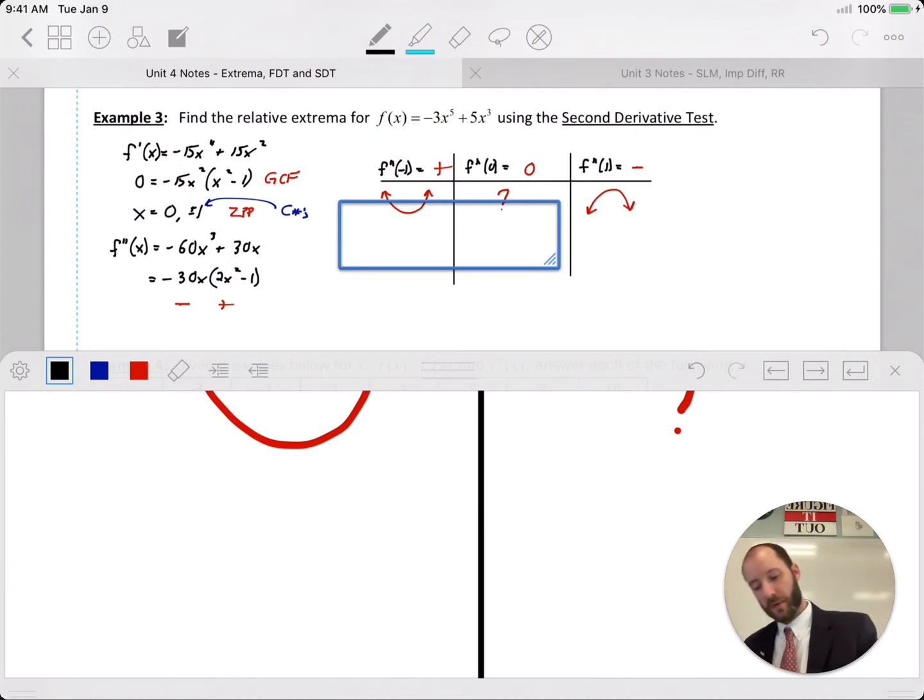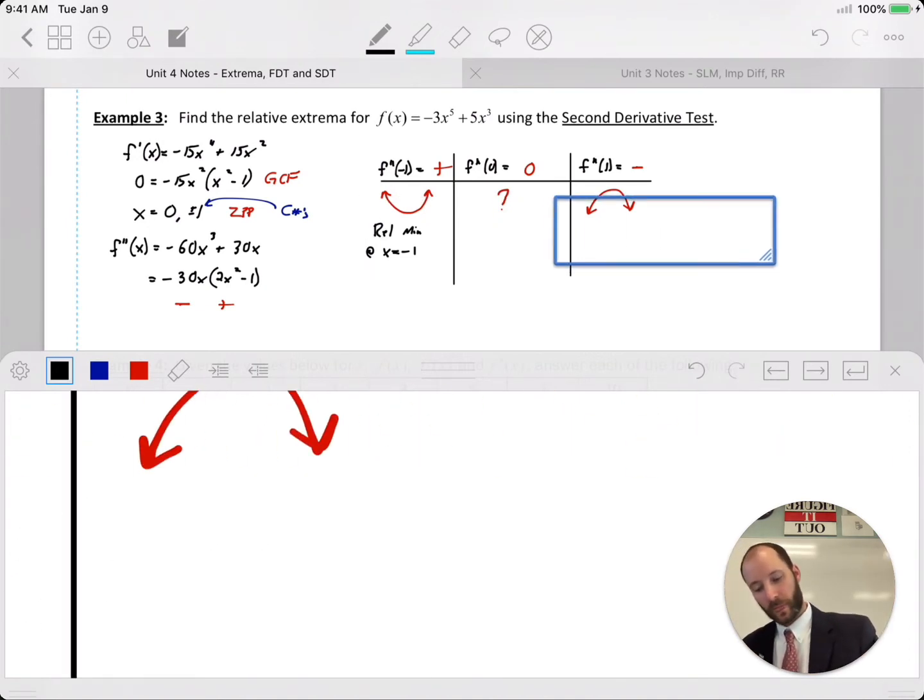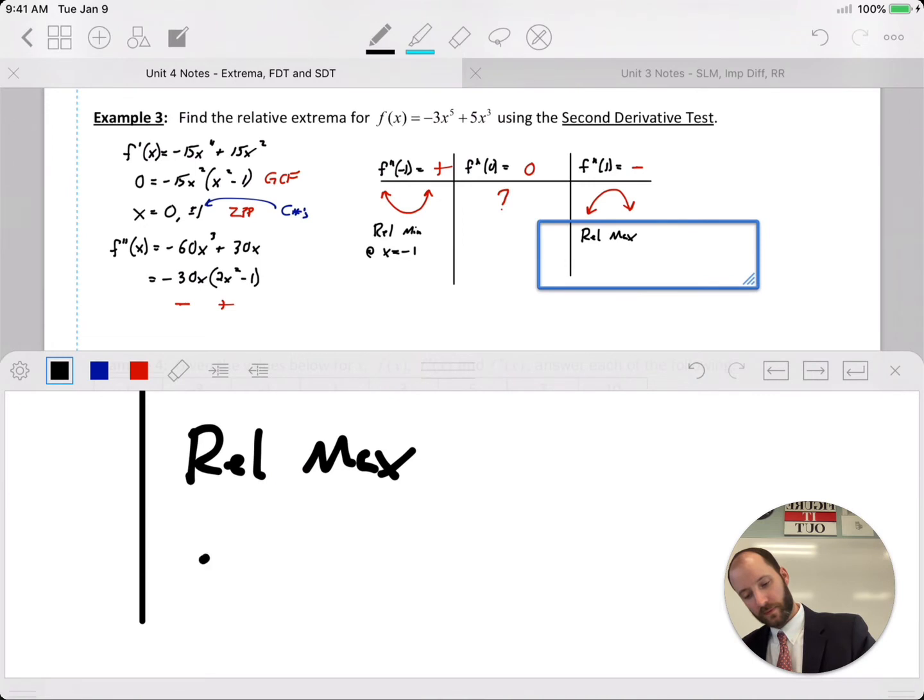So with concave up you have a relative minimum at x equals negative one. You have a zero slope, the first derivative equals zero, and concave up, so relative min. Here with slope zero and concave down, relative maximum at x equals one.